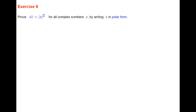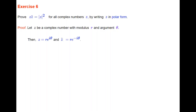In this exercise you're asked to prove that Z times the conjugate of Z equals the modulus of Z squared, for all complex numbers Z. But you're asked to do the proof by writing Z in polar form. Let Z be a complex number with modulus R and argument θ. Then Z = R·e^(iθ) and the conjugate of Z is R·e^(−iθ). Stop the video and complete the proof — it's quite easy.